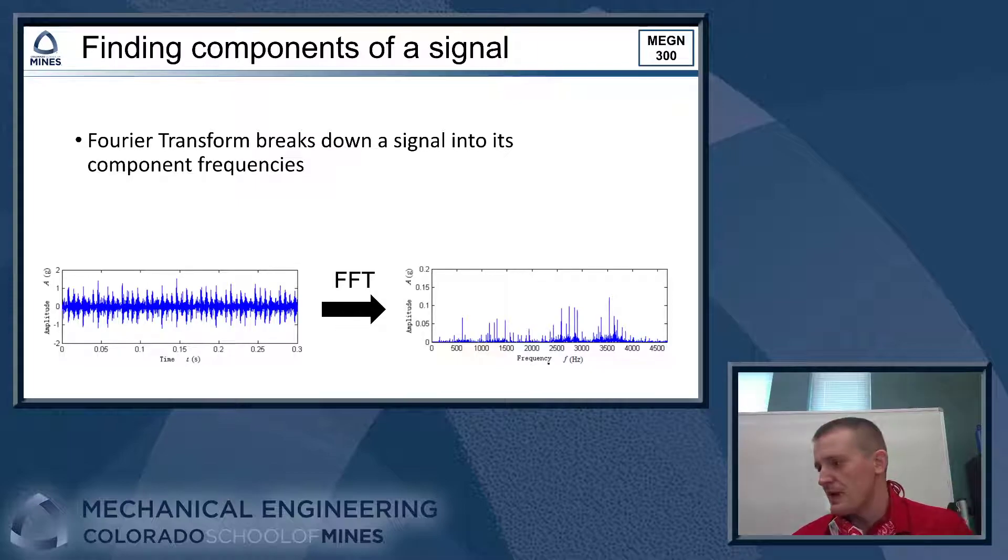The way we do this is we use a mathematical operation called the Fourier transform. So we're going to take the signal, this complex signal, and we'll break it down into its component frequencies. So what's going to happen here is we'll take the complex signal and run it through this mathematical algorithm, and what will happen is the algorithm will tell us what sine waves are present and what the amplitude of each of those sine waves are.